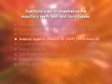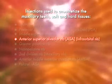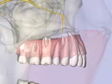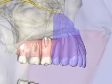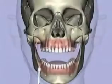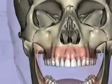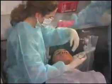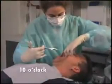The anterior superior alveolar nerve block, also known as the infraorbital nerve block, provides pulpal anesthesia to the five maxillary anterior teeth — the incisors, the canine, and the two premolars — in addition to the buccal soft tissue and bone overlying these teeth. The skin of the lower eyelid, the lateral side of the nose, and the upper lip is also anesthetized. For a right or left ASA nerve block, the right-handed operator should sit at the 10 o'clock position facing in the same direction as the patient.